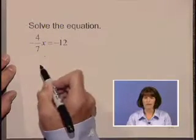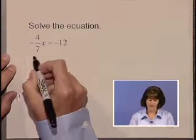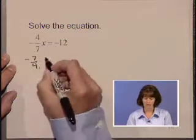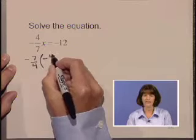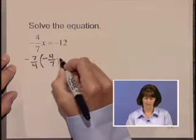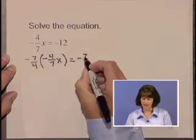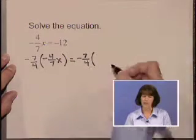Let's multiply it by its reciprocal, which is negative seven-fourths. So let's take negative seven-fourths times the left-hand side and do the same to the other side as well. Negative seven-fourths times negative 12.